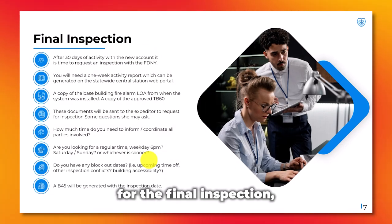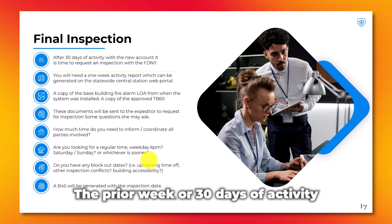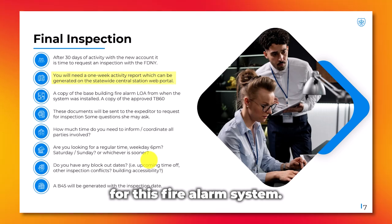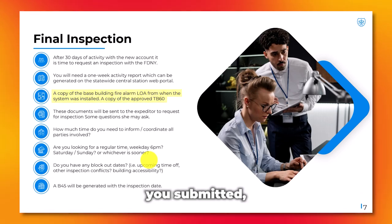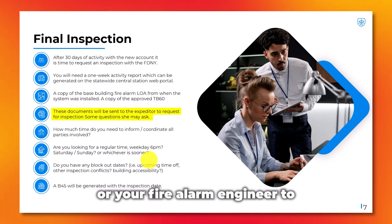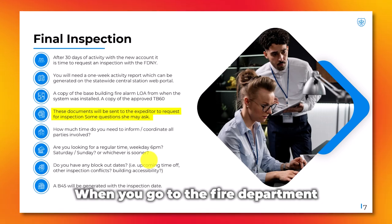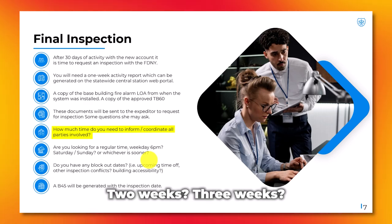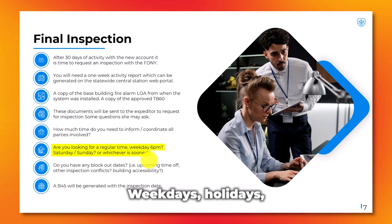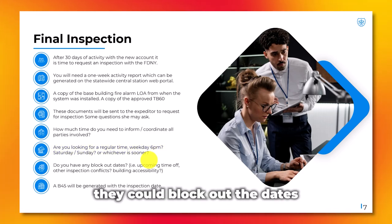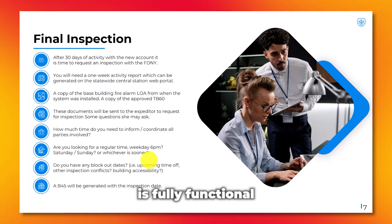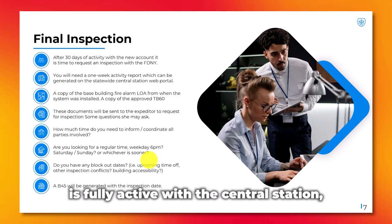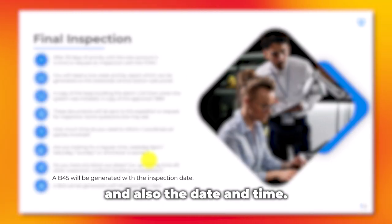Once you're scheduled for the final inspection, you'll need an activity report from the prior week or 30 days of activity for the fire alarm system, a copy of the base building fire alarm letter of approval, and a copy of the approved TB-60 you submitted. Send these documents to your expediter or fire alarm engineer, or submit them yourself to the fire department. Specify your time frame for inspection — two weeks, three weeks, weekdays, after hours, whatever you need — so they can block out dates and give you an inspection. Make sure all devices are tested, the system is fully functional, and your monitoring account is fully active. You'll then get a B-45 with the inspector's name and the date and time.